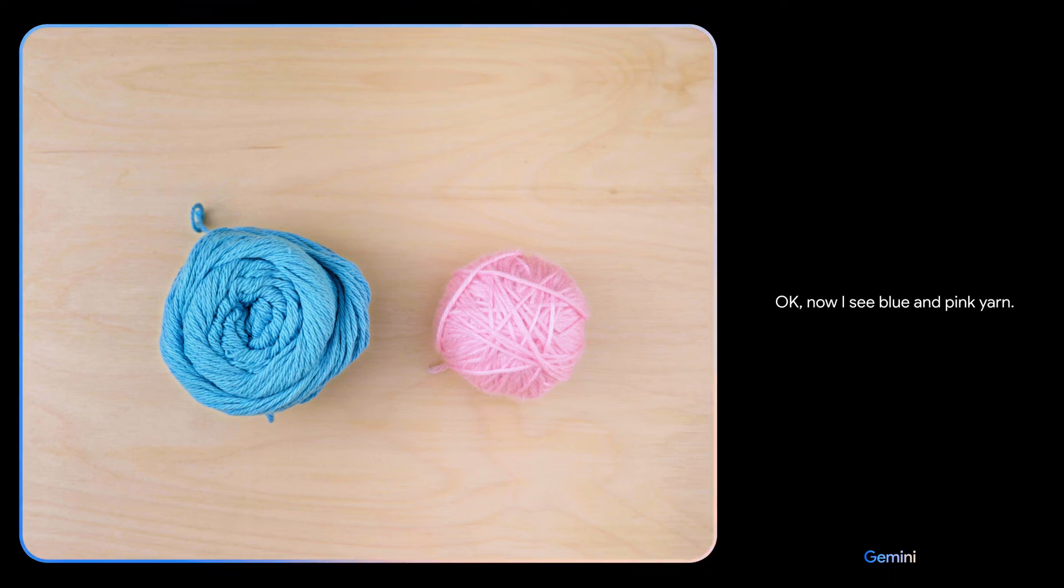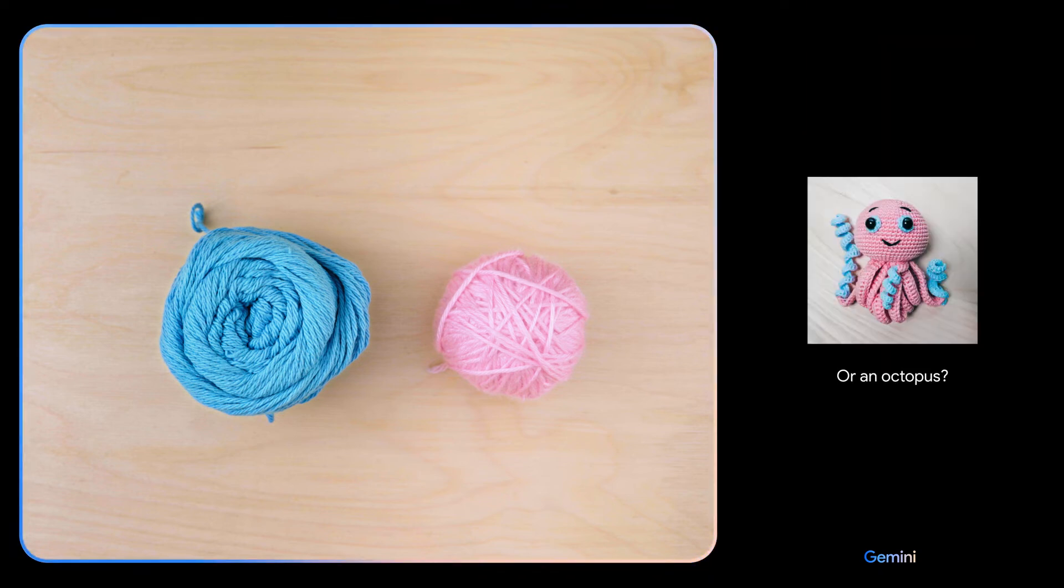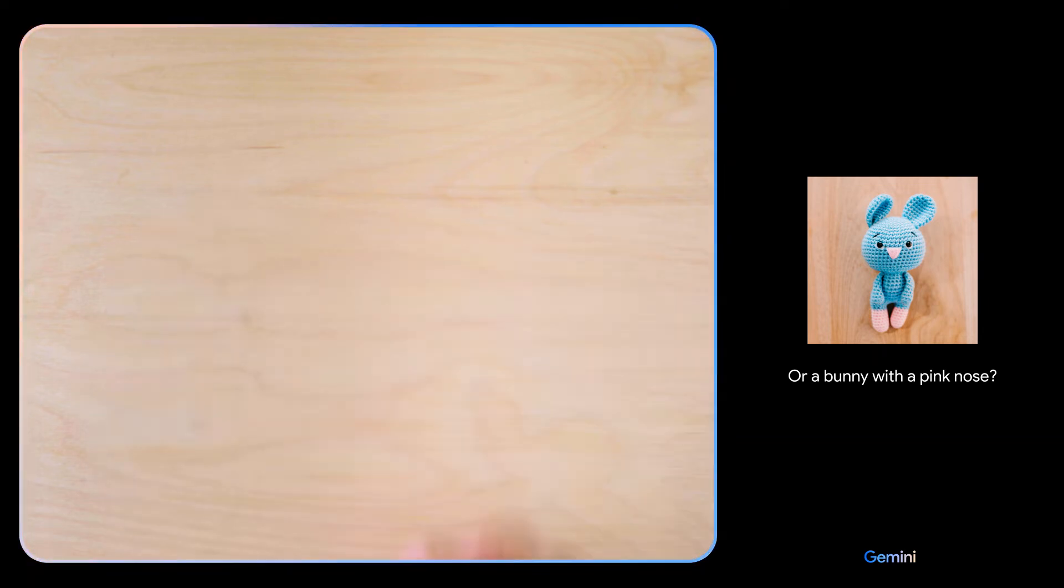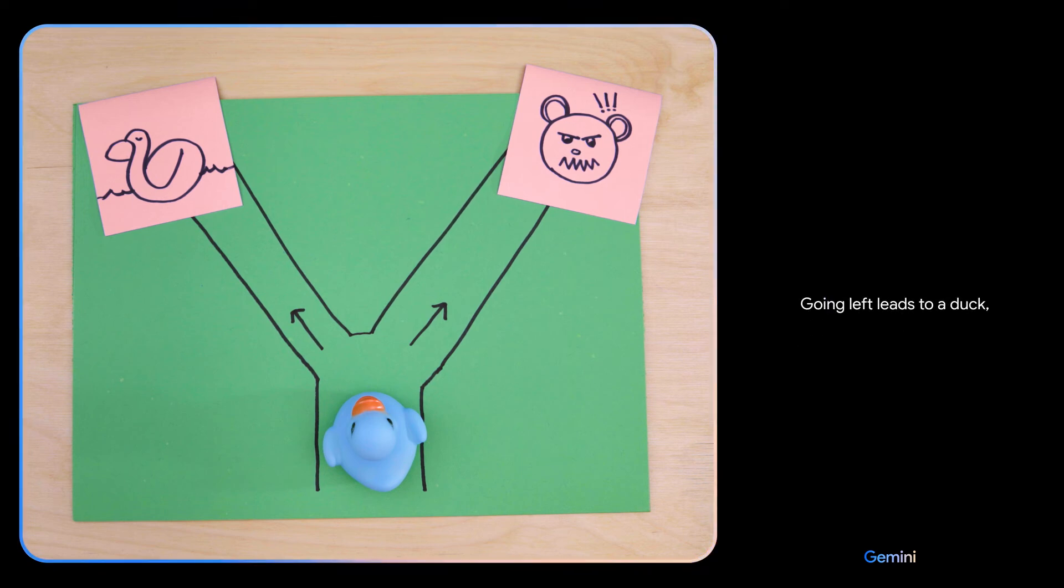Okay, how about these colors and maybe show me some animals? Okay, now I see blue and pink yarn. How about a pig with blue ears, or an octopus, or a bunny with a pink nose? Oh, I'll keep those in mind.